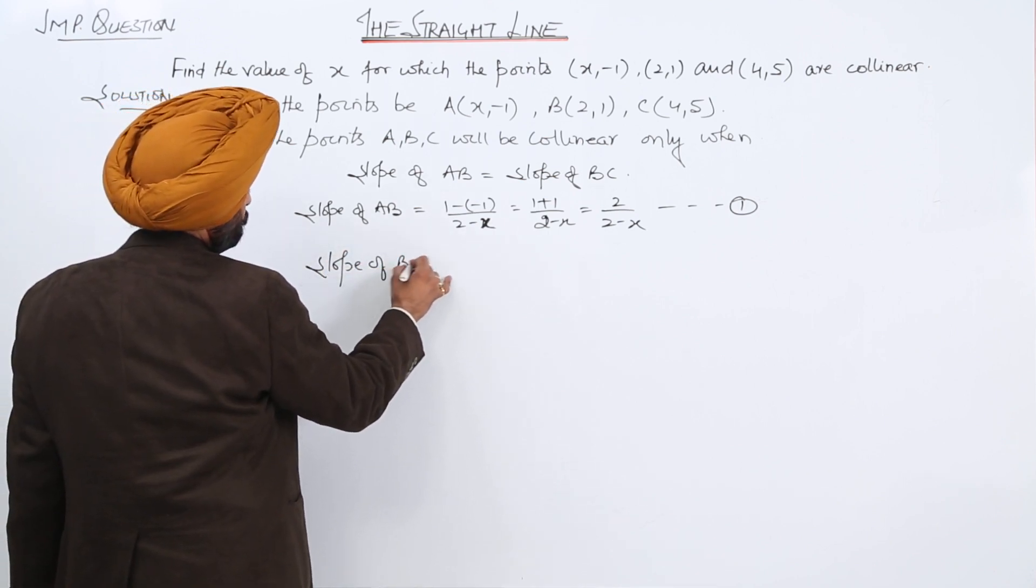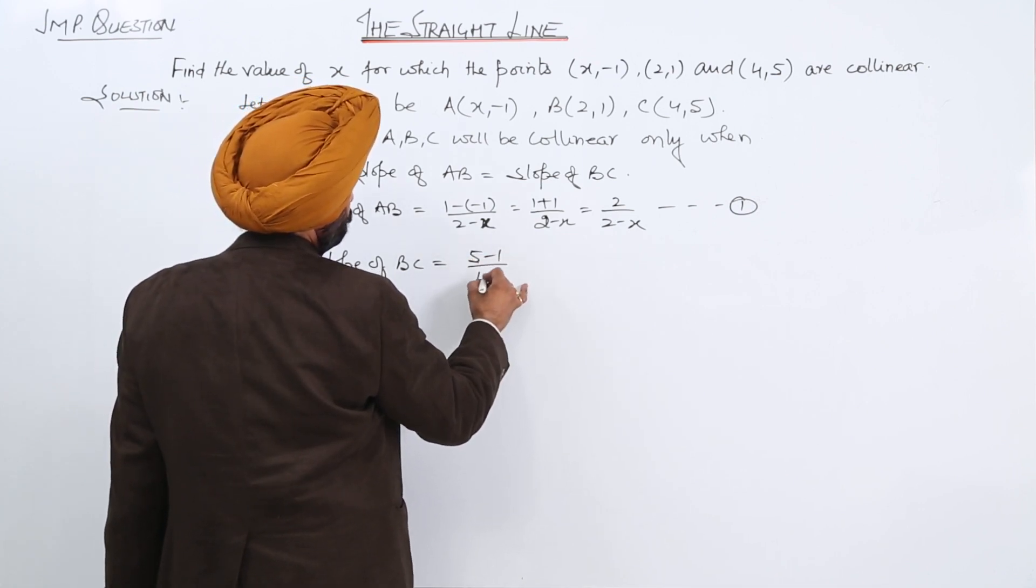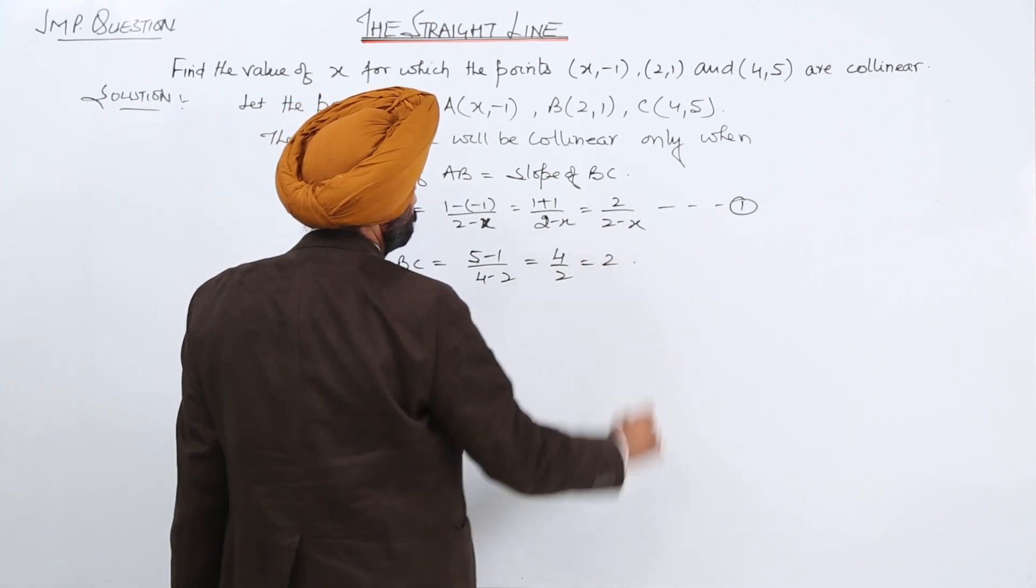Now, slope of BC is 5 minus 1 upon 4 minus 2. This is 4 upon 2 is equal to 2.